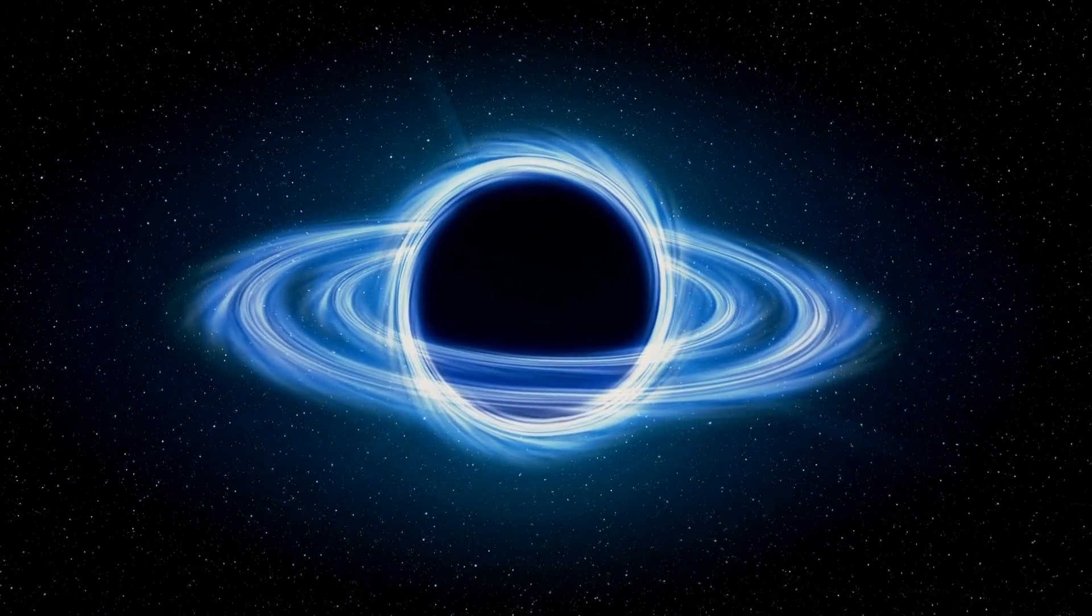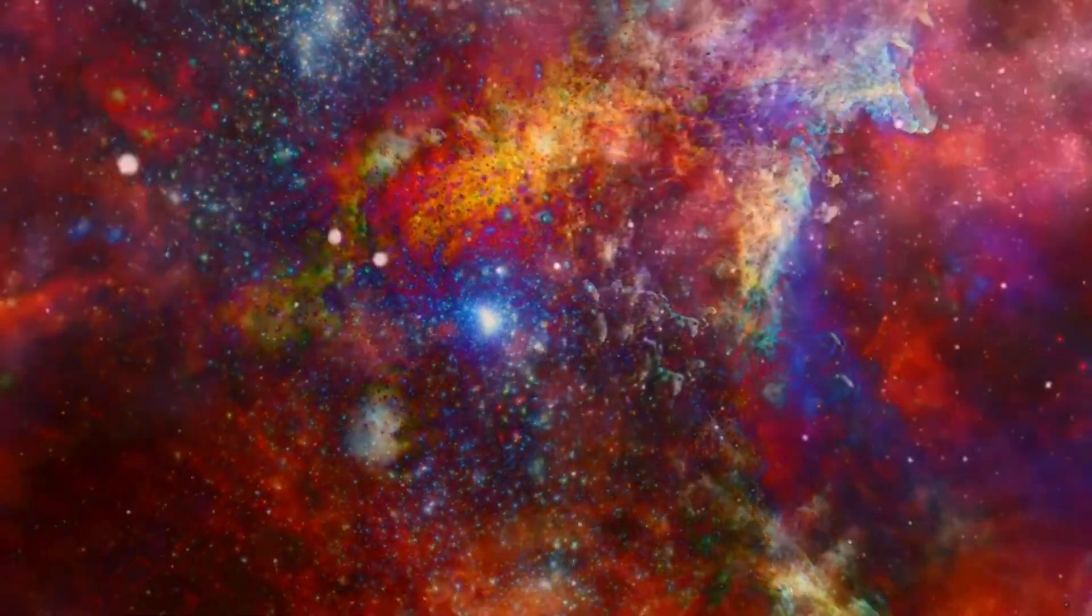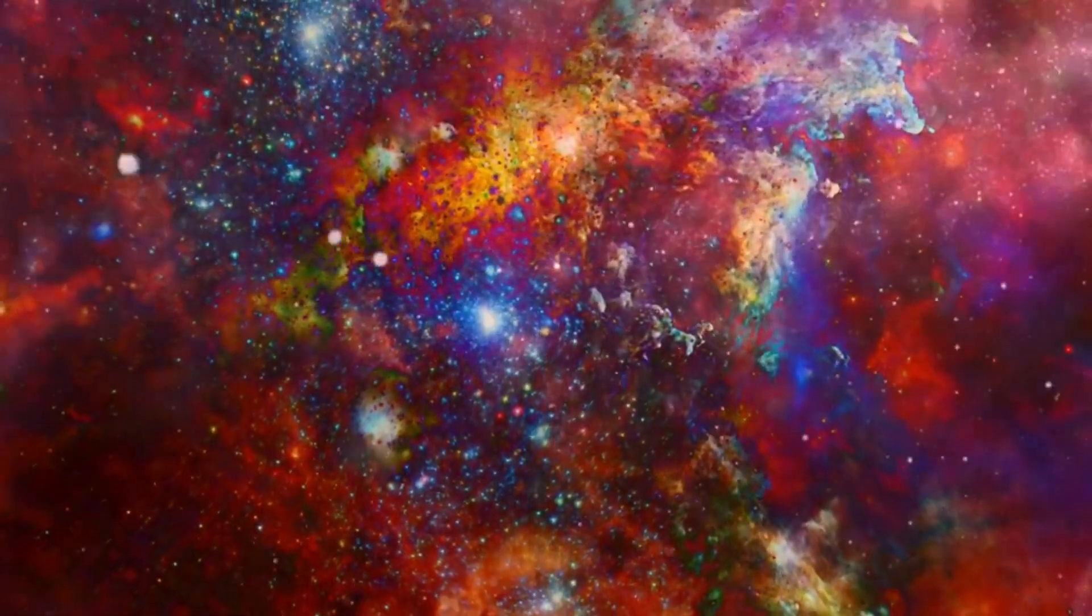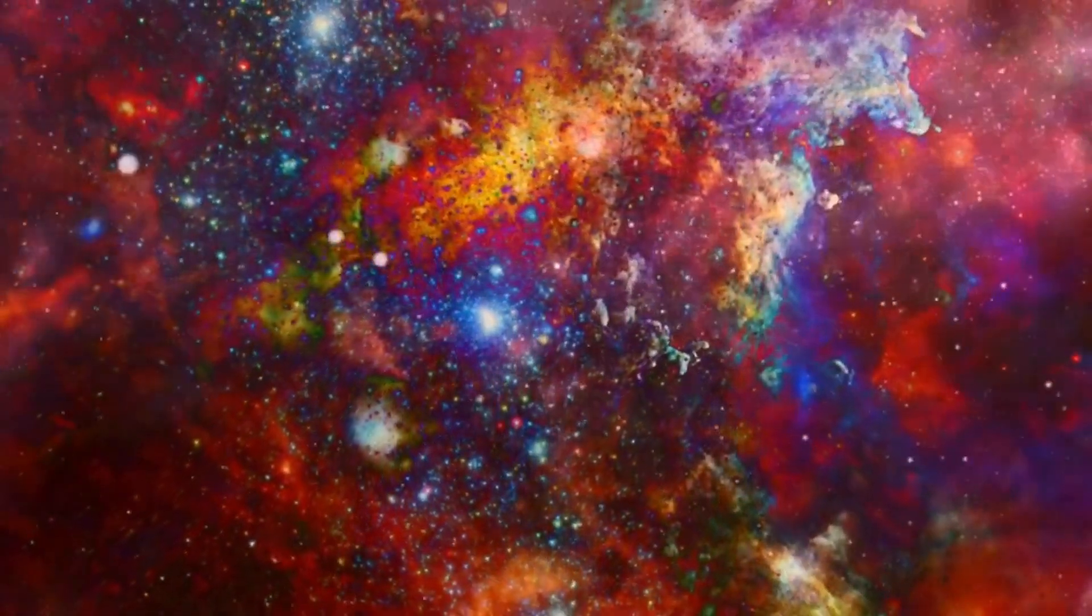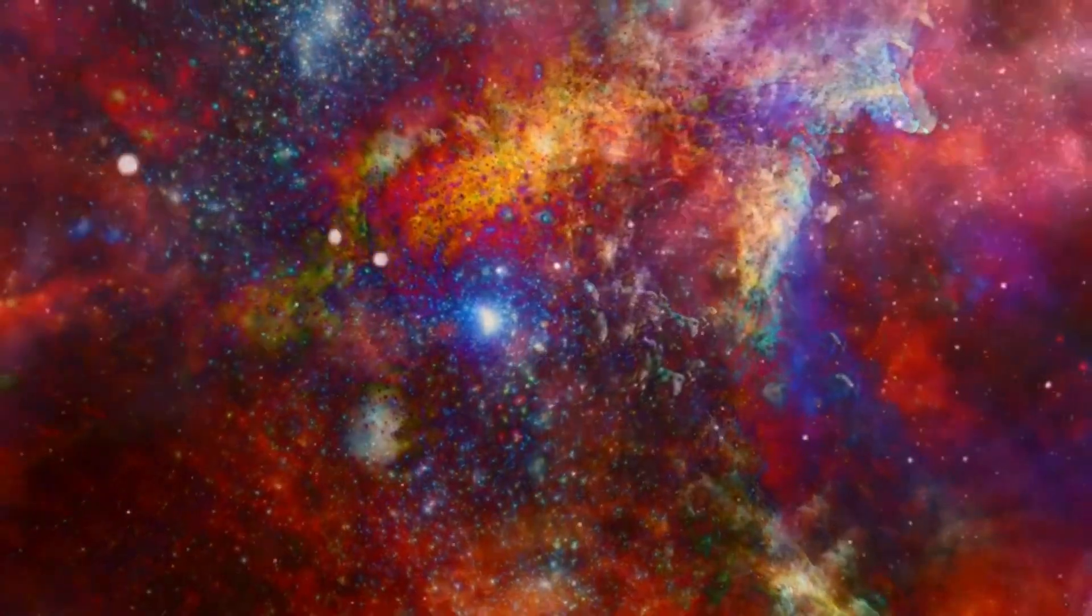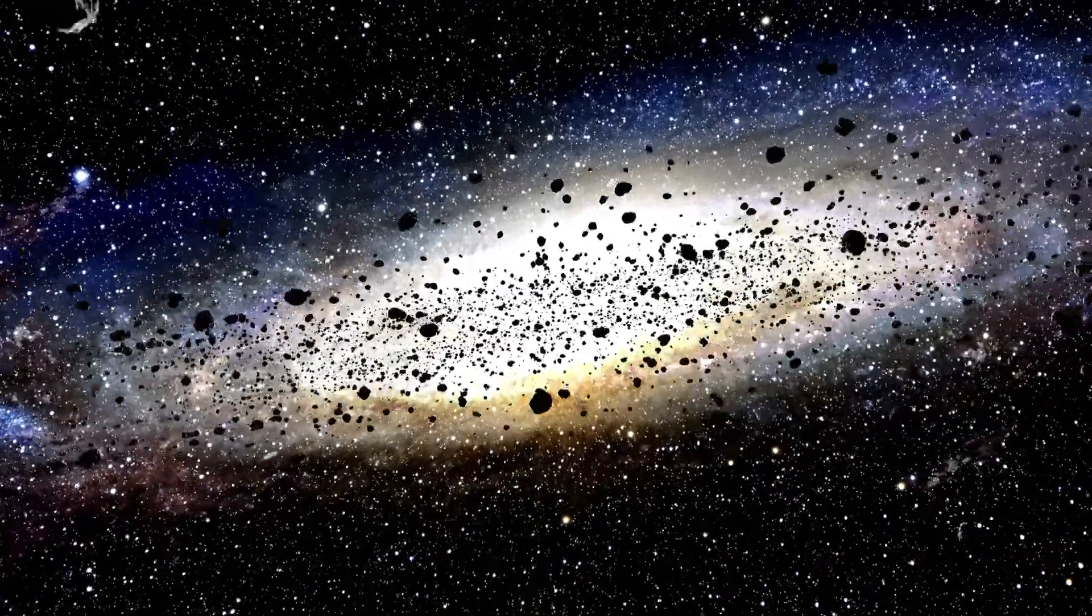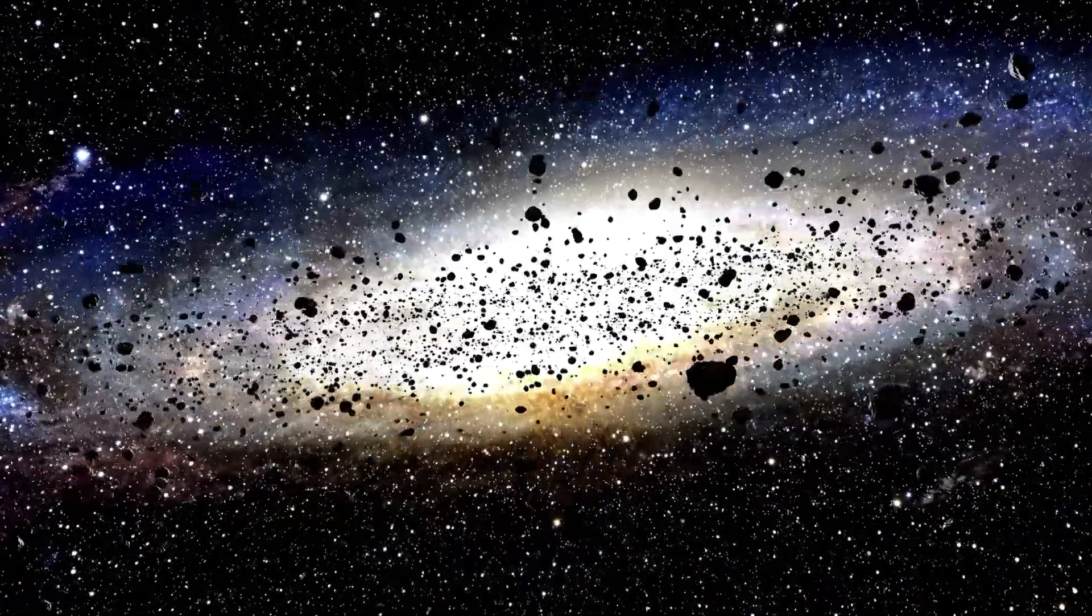Located approximately 650 light-years from Earth in the constellation Orion, Betelgeuse isn't just any ordinary star. It's a red supergiant, one of the most brilliant stars known to us, shining with a brightness over 100,000 times that of our sun. But why does this red giant matter so much to us?